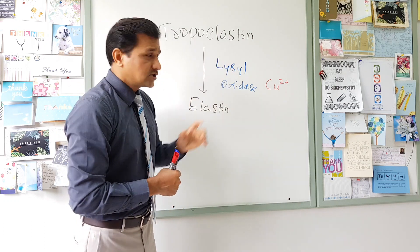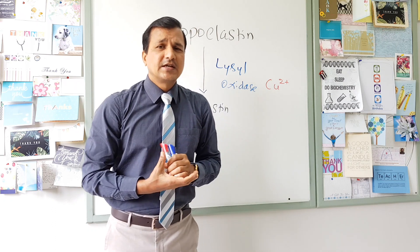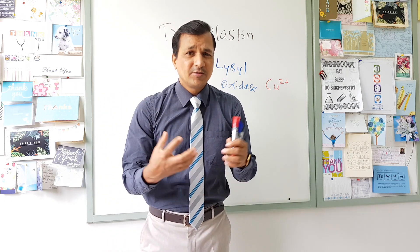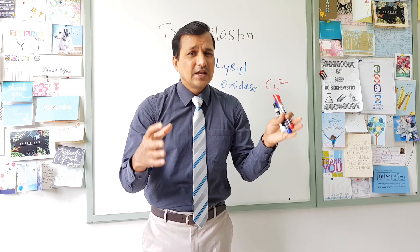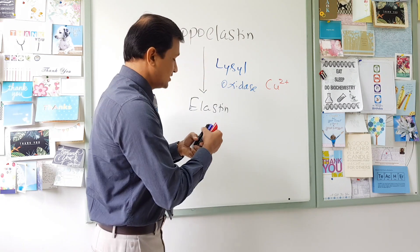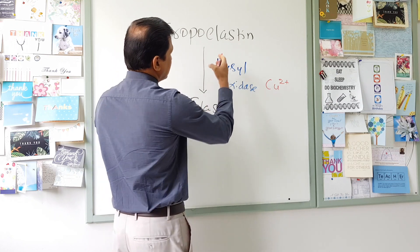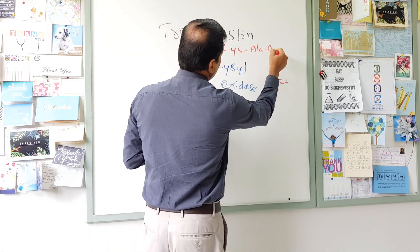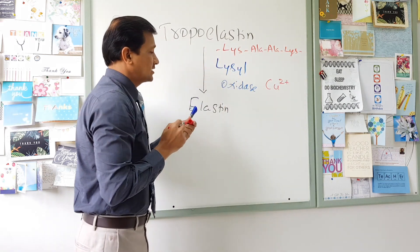How does lysyl oxidase convert tropoelastin into elastin? Tropoelastin has large numbers of lysine amino acids. A common sequence found in the elastin molecule is lysine-alanine-alanine-lysine, and that is a common sequence you find in tropoelastin.